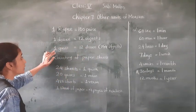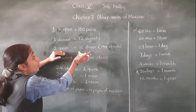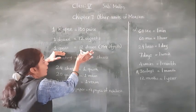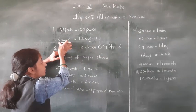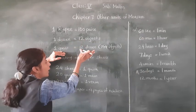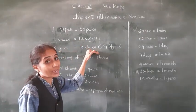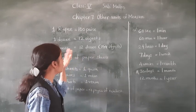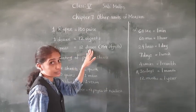After that, now 1 gross. Please remember: 1 gross equals 12 dozen. See, here it is 1 dozen — in 1 dozen, 12 objects. So 12 dozen. 1 gross is equal to 12 dozen.